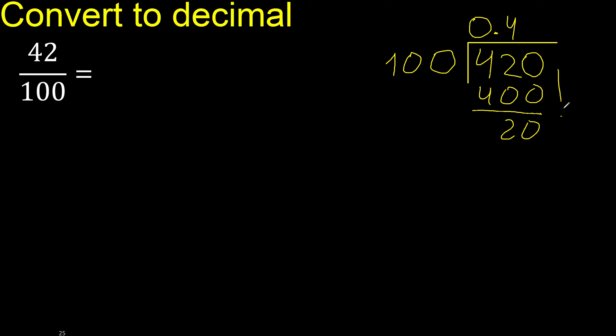There is no number that goes down, therefore complete — always complete with 0. Point is here. 100.